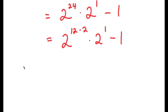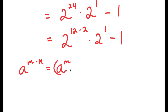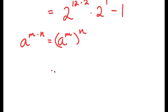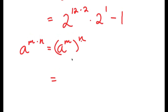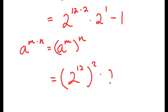Another property of exponents is that a to the power of m times n is equal to a to the power of m to the power of n. So 2 to the power of 12 times 2 is going to equal 2 to the power of 12 to the power of 2, and I have this times 2 minus 1.